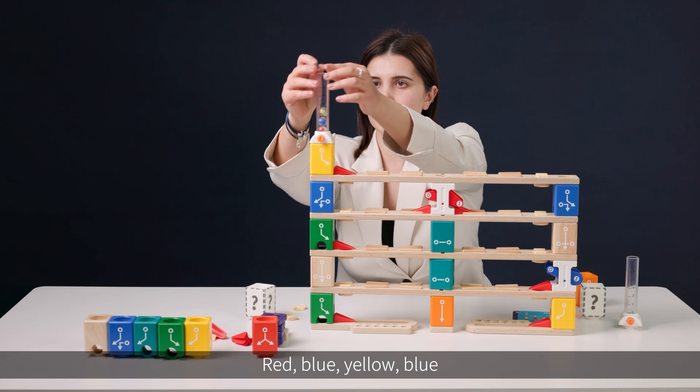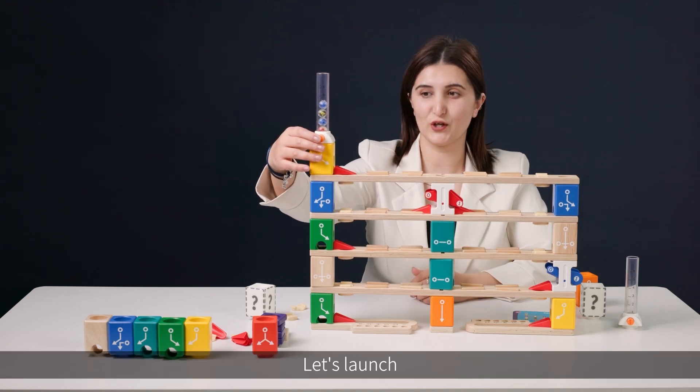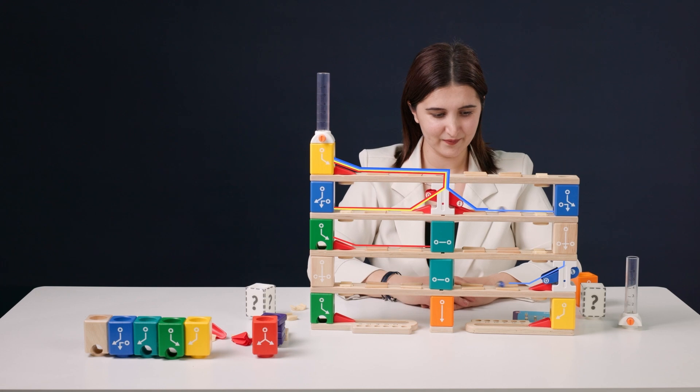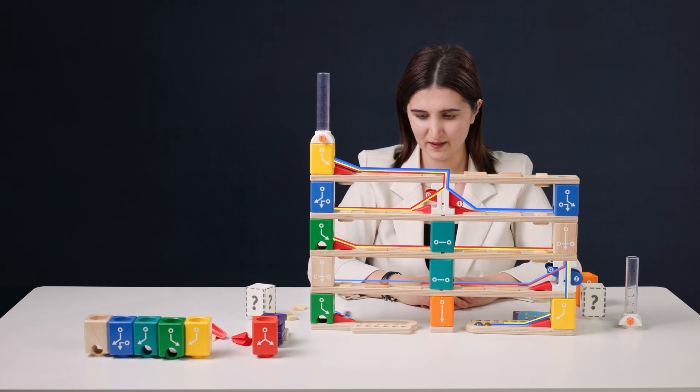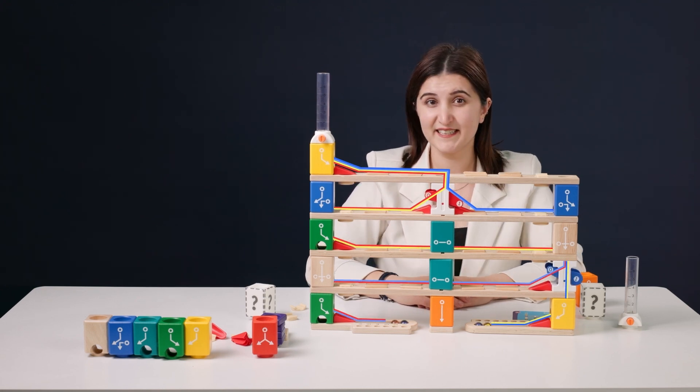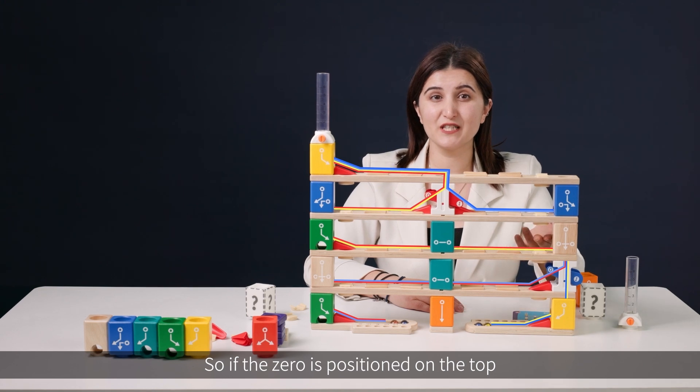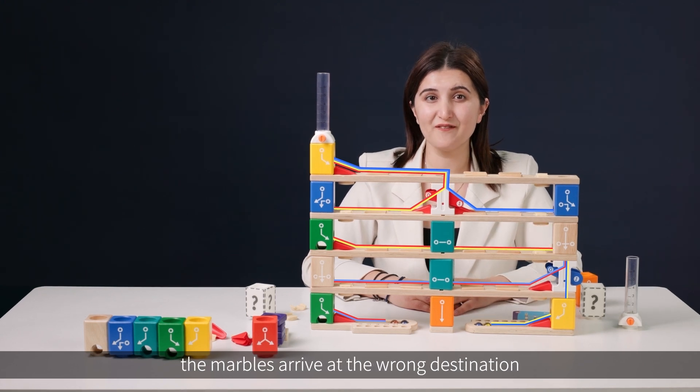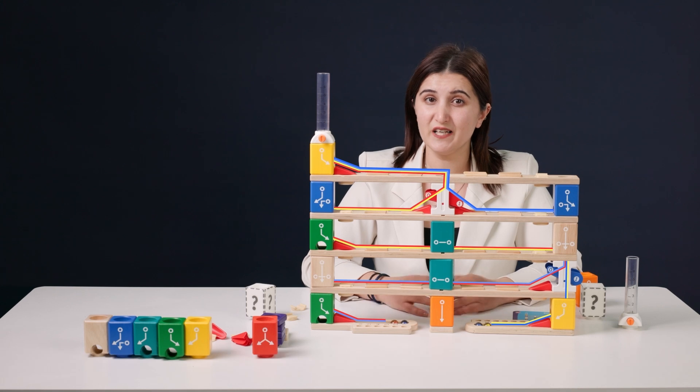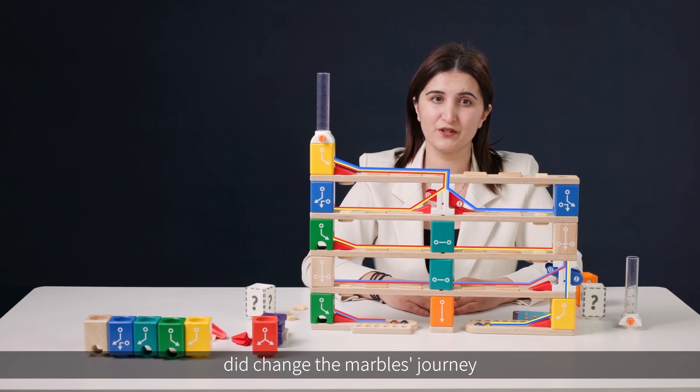Here it goes. Red, blue, yellow, blue. Let's launch. So, if the zero is positioned on the top, the marbles arrive at the wrong destination. Even though the blue seesaw block did change the marble's journey.